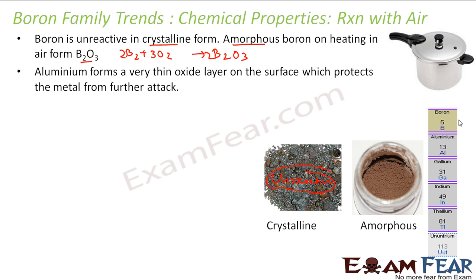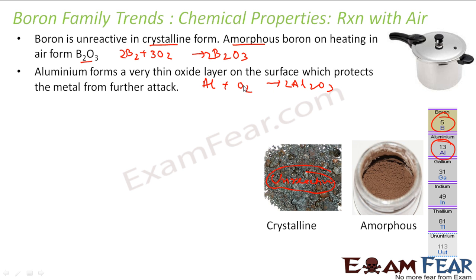For aluminium, it forms a thin layer of oxide on the surface which protects the metal from further attack. When aluminium reacts with oxygen, it quickly forms an aluminium oxide (Al2O3) coating which protects it from further corrosion. That's why aluminium is used in utensils — once it reacts, it forms a protective layer. Al2O3 is my protective coating.